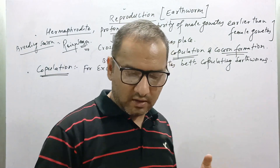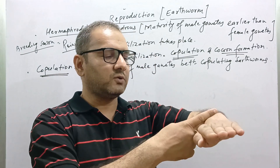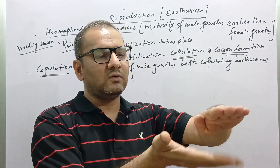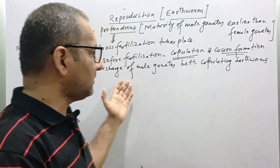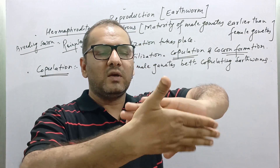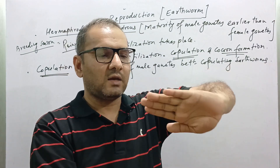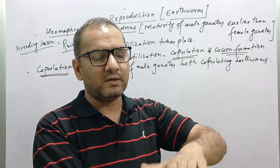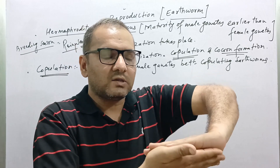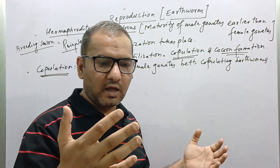During the process of copulation, two earthworms come in contact with each other. This is one earthworm — this is the anterior end, this is the posterior end. The upper side is the dorsal surface, the lower side is the ventral surface. During this process, two earthworms come in contact with each other by their ventral surface, facing anterior ends towards opposite directions. In this way, the male genital pore of one earthworm remains in contact with the spermathecal opening of the other earthworm.